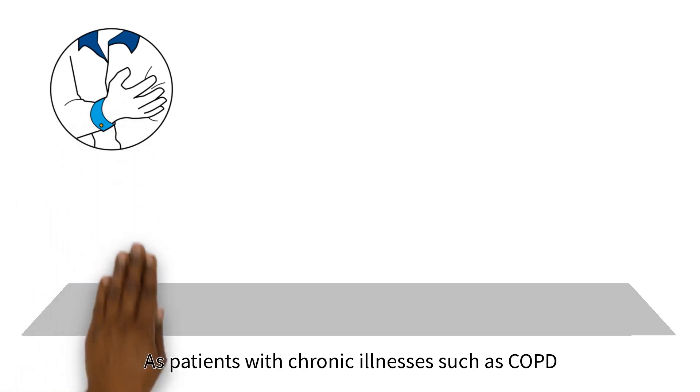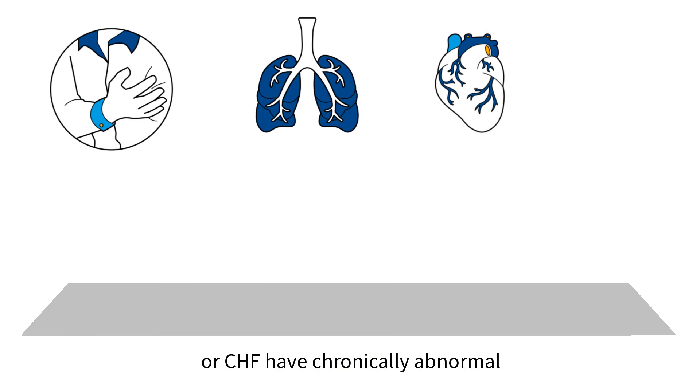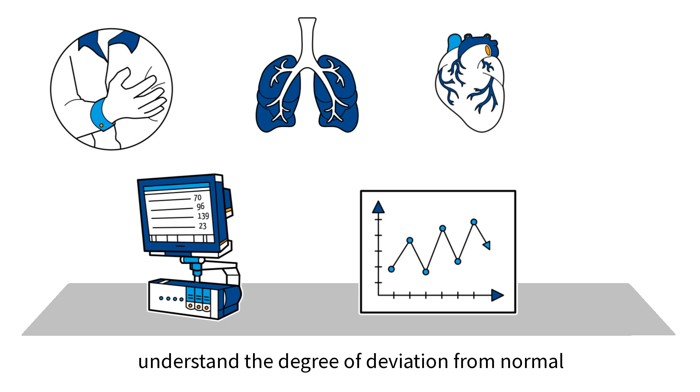As patients with chronic illnesses such as COPD or CHF have chronically abnormal vital signs, more regular documentation of vital signs allows clinicians to know the baseline values of an individual patient's vital signs during a period of relative wellness and understand the degree of deviation from normal and detect increases in disease severity.